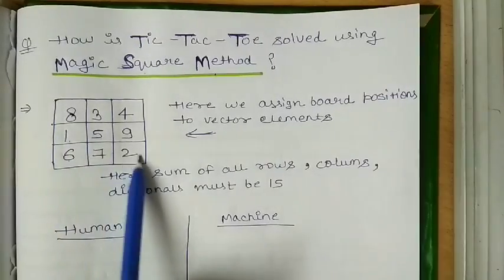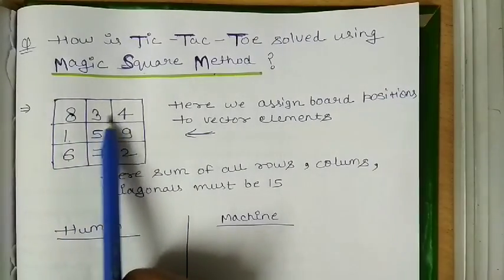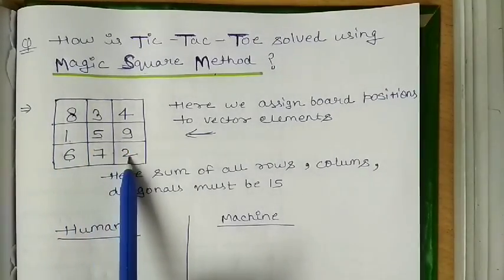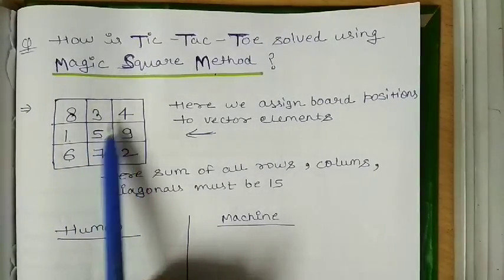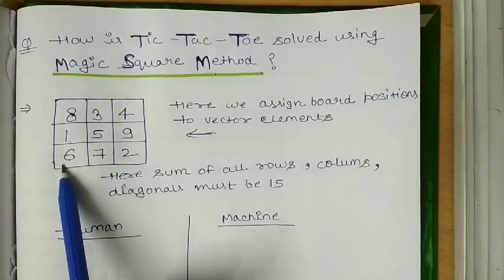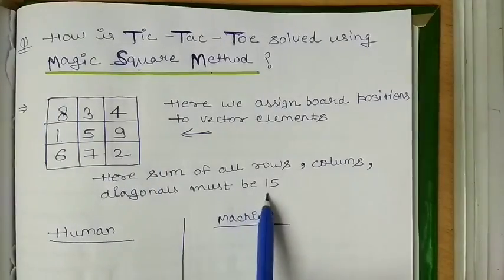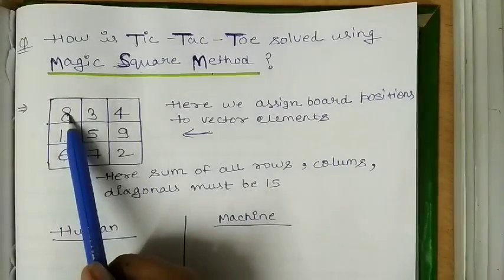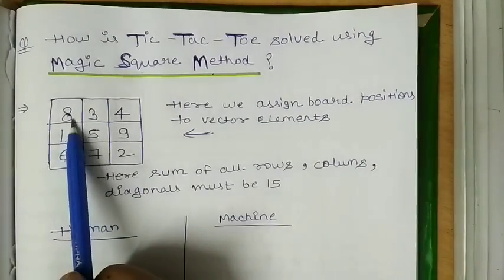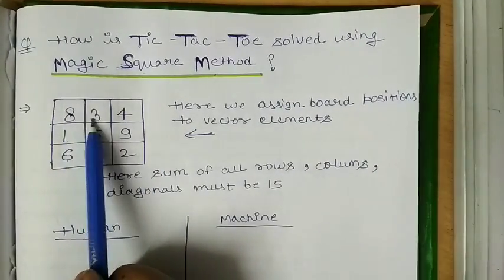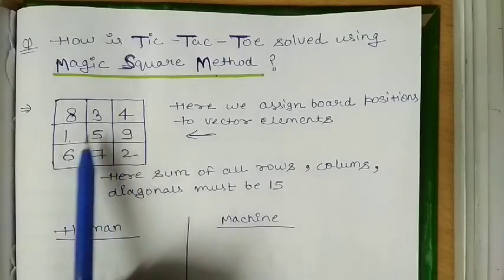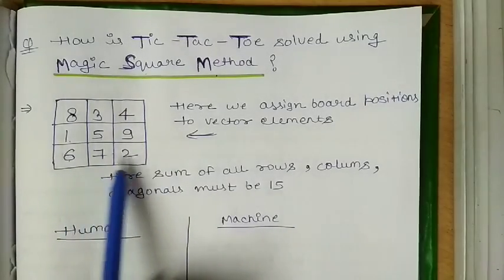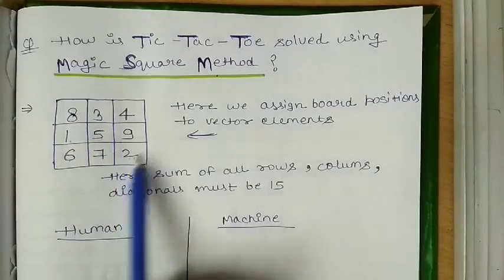If you take this diagonal or this diagonal — 8 plus 5 plus 2, or 4 plus 5 plus 6 — the sum must be 15. And if you take rows like 8, 3, 4 or 1, 5, 9 or 6, 7, 2, the sum must be 15.